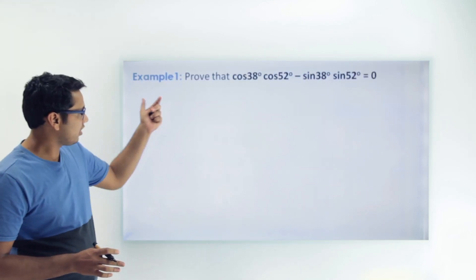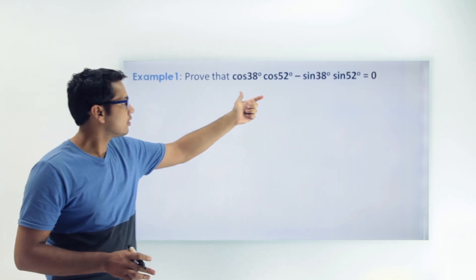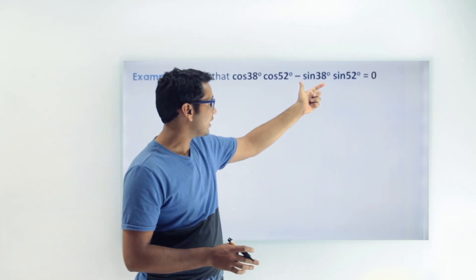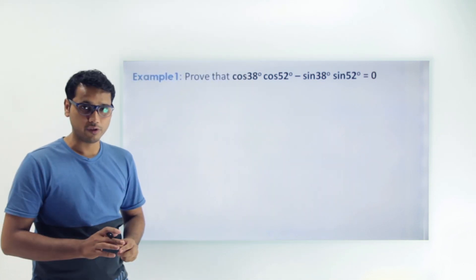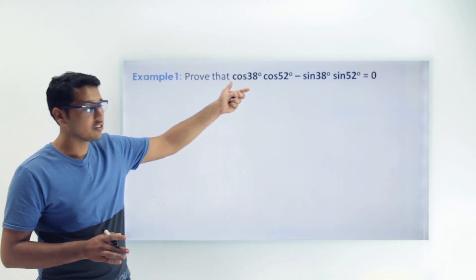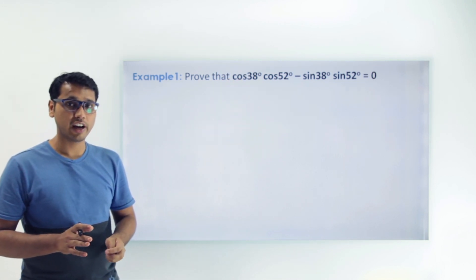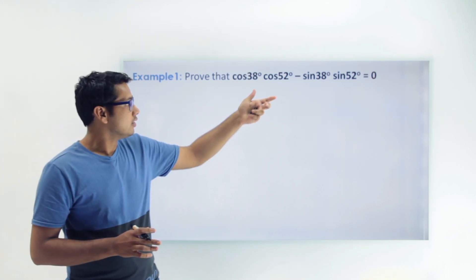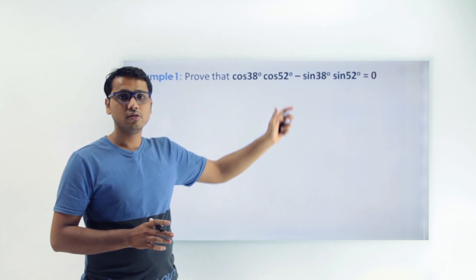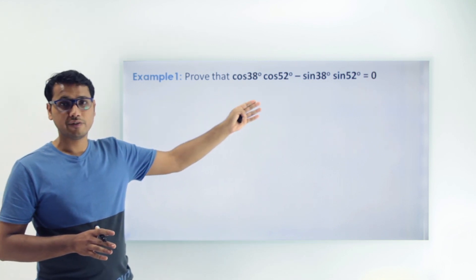Now we'll see some different type of examples. The first example says we have to prove that cos(38) × cos(52) minus sin(38) × sin(52) is equals to 0. We don't know the values of 38 degrees and 52 degrees. If we had known the values, we could have put them in and proved that the left hand side is equals to 0.